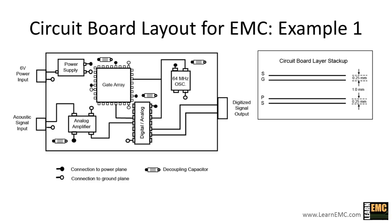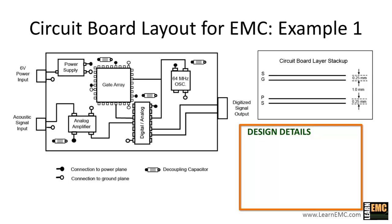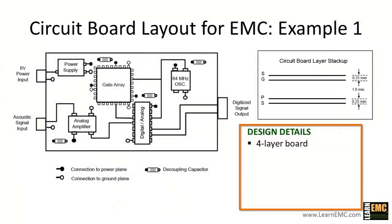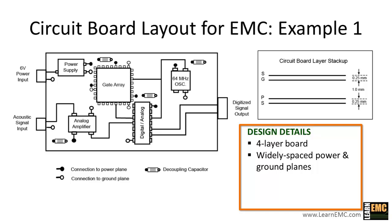Before we get into the specific problems with this layout, let's take a closer look at a few relevant details of the design. From the circuit board layer stack up, we see that we have a four-layer board with both power and ground planes. Notice that there's one millimeter of spacing between the power and ground planes. Power planes spaced greater than half a millimeter are considered widely spaced. The black dots on the board represent vias connecting to the power plane, and the open dots are connections to the ground plane.